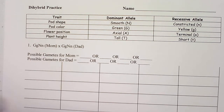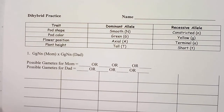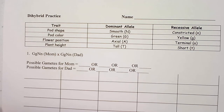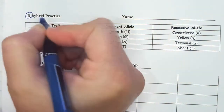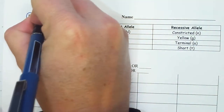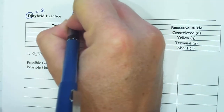Let's talk about dihybrid Punnett squares. We're going to get a little fancy. Sometimes dihybrids can actually be smaller than a monohybrid Punnett square, and I'll show you that shortcut later on. So let's refresh our memory. The prefix 'di' means two, so these are Punnett squares with two traits.